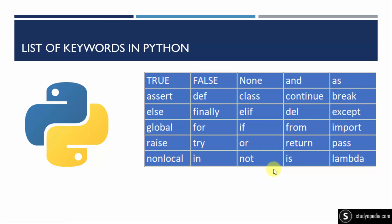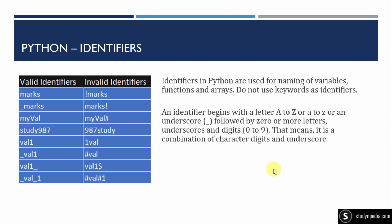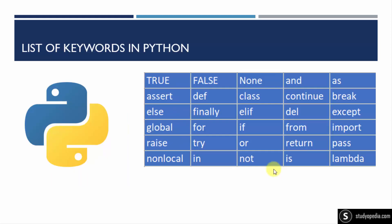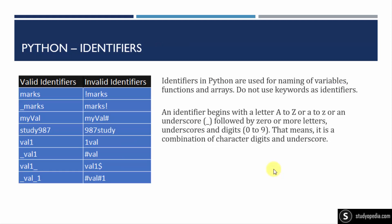Let's move further. Here are identifiers. Identifiers are basically used for naming variables, functions, and arrays. We cannot use a keyword as an identifier — that means we cannot use def, finally, del, except, for, if, while, or try as identifiers. Identifiers are basically named by users, just like creating a variable.